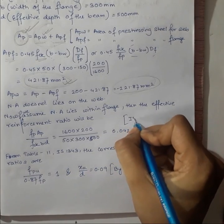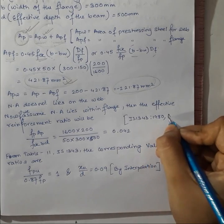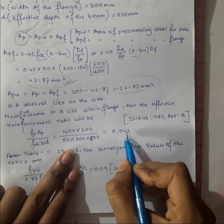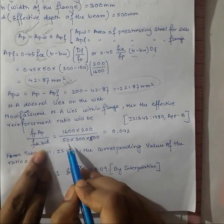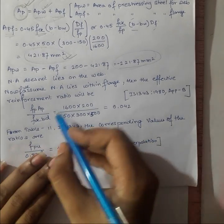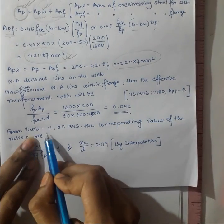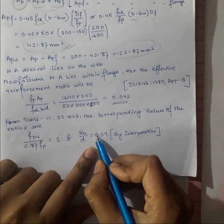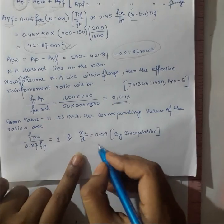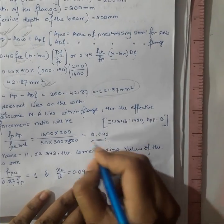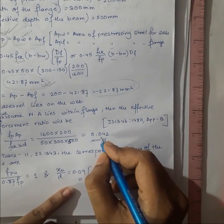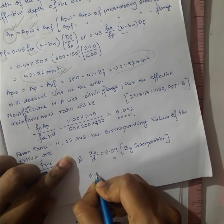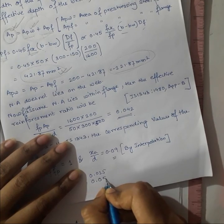By checking the effective reinforcement ratio from IS code IS:1343-1980, Appendix B, the reinforcement ratio works out to 0.042, after substituting fp, Ap, fck, b, and d. From Table 11 of IS:1343, we need the corresponding values of fpu / (0.87 fp) and xu / d. Since only 0.025 and 0.05 appear in the table, we interpolate for 0.042.